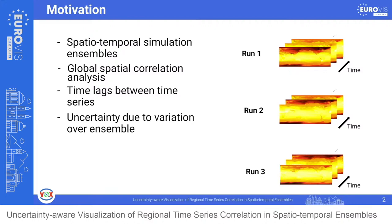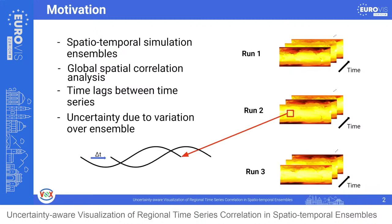My name is Karim Hussmann and together with Marina Evers, we present uncertainty-aware visualization of regional time series correlation in spatio-temporal ensembles. Spatio-temporal ensemble data is frequently used to study uncertainties in various natural phenomena — one example is climate simulations, where ensembles are created to cover uncertain initial conditions. Each spatial sample point contains a time series for each ensemble member. The correlation between these time series provides insights into structural properties of the data.